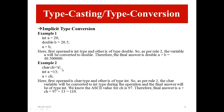In the second example, we have one character type variable and one integer type variable. So as per rule 1, the character variable will be converted to int type during the operation, and the final answer will be of type int. We know the ASCII value for 'ch' (which is 'a') is 97. Therefore, the final answer is a plus ch. The value of ch is 97, and the value of a is 13, so 97 plus 13 gives a result of 110.